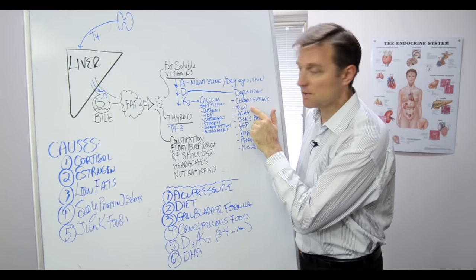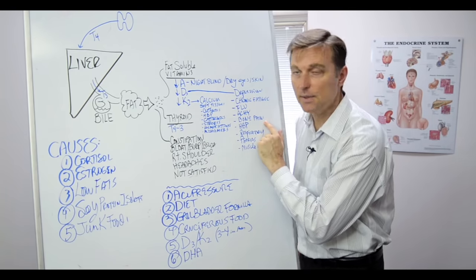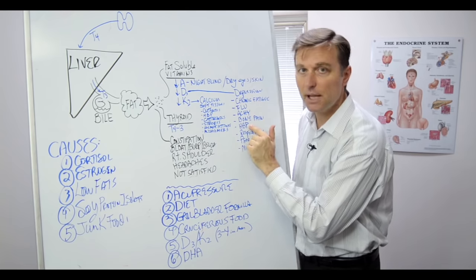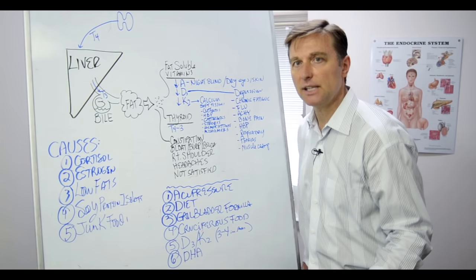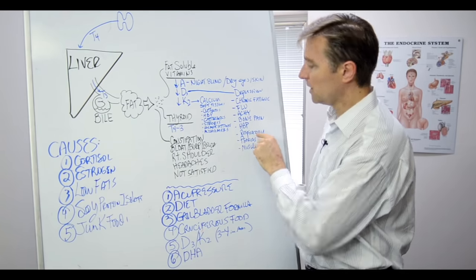So you've got the flu, achy joints. Well, that could be symptoms of the flu too. Bone pain, that could be symptoms of the flu. High blood pressure, because one of the remedies for high blood pressure is taking vitamin D. Respiratory, like asthma.